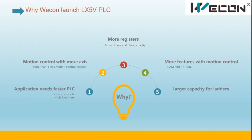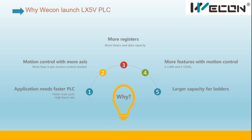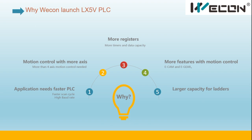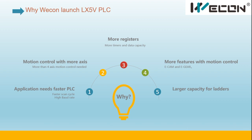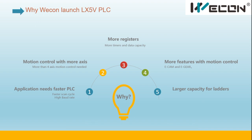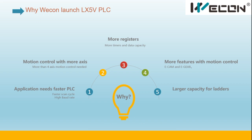Why was this launched? In the market, more applications require faster PLCs — faster scan cycles and higher flow rates. These applications typically involve more than four axes of motion control. The PLC requires more registers, more timers, bigger data capacity, and motion control functions like E-cam and E-gear are very important. Ladder programming capacity should also be bigger.